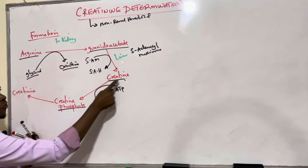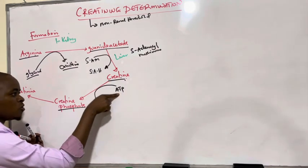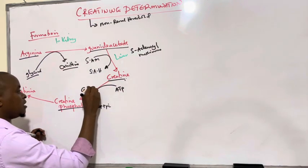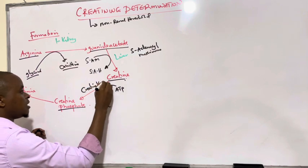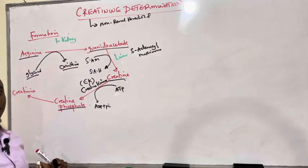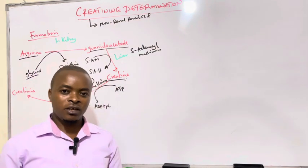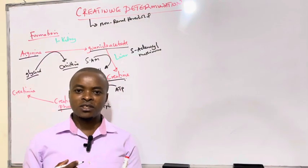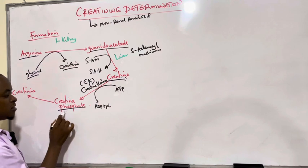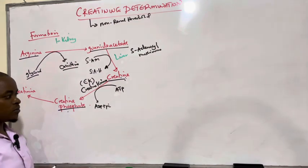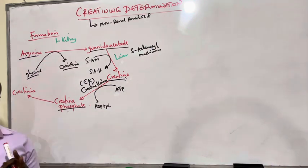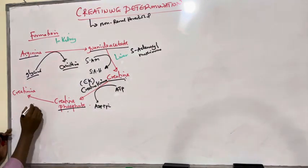What donates a phosphate group on creatine is ATP. This reaction of phosphorylation of ATP occurs in the presence of an enzyme known as creatine kinase, abbreviated as CK — some books call it CPK, creatine phosphokinase. Creatine kinase catalyzes the phosphorylation of creatine to form creatine phosphate in the liver cells. After forming creatine phosphate, this creatine phosphate undergoes a non-enzymatic reaction.